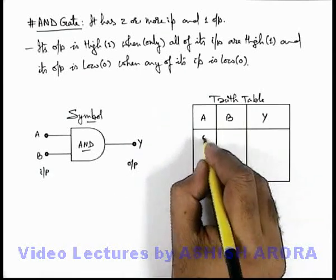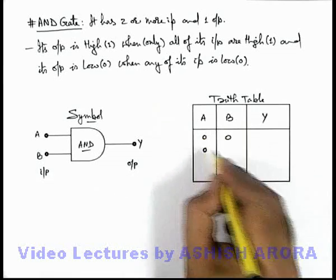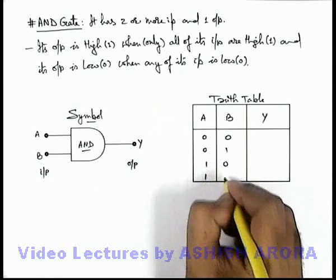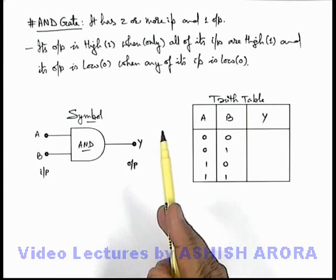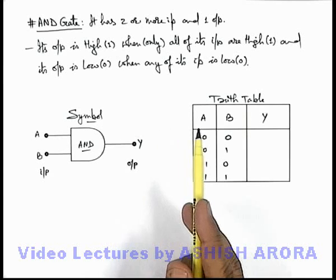For the 2 input terminal, basic combinations would be 0-0, 0-1, 1-0, or 1-1. Now in this situation, here we have seen that the output will be high when all of its inputs are high.